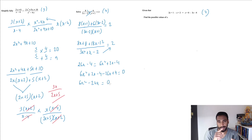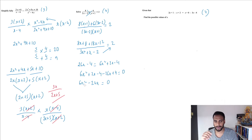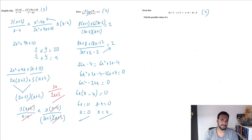This is actually easier because there's no constant number — no need for the quadratic formula or completing the square. It's similar to the first question: 6x squared minus 24x, what's in common? 6x. Taking 6x out leaves 6x(x minus 4) equals zero. So two solutions: 6x equals zero means x equals zero, and x minus 4 equals zero means x equals 4. That's your answer.